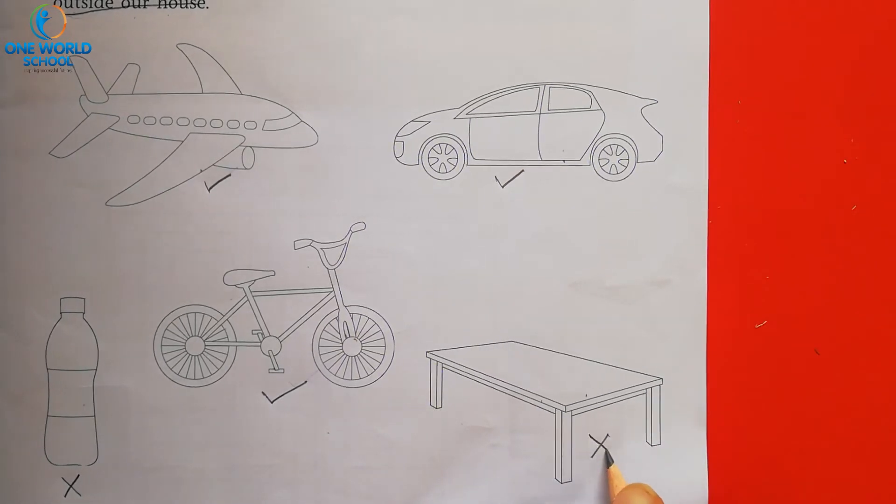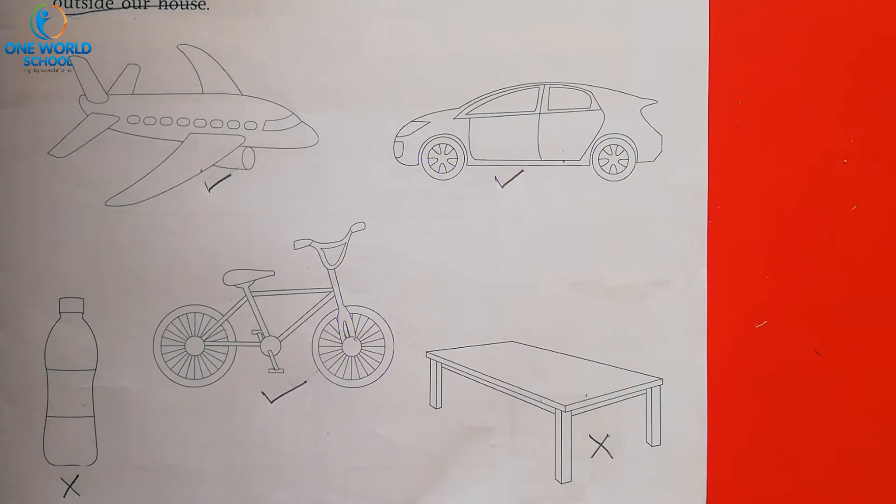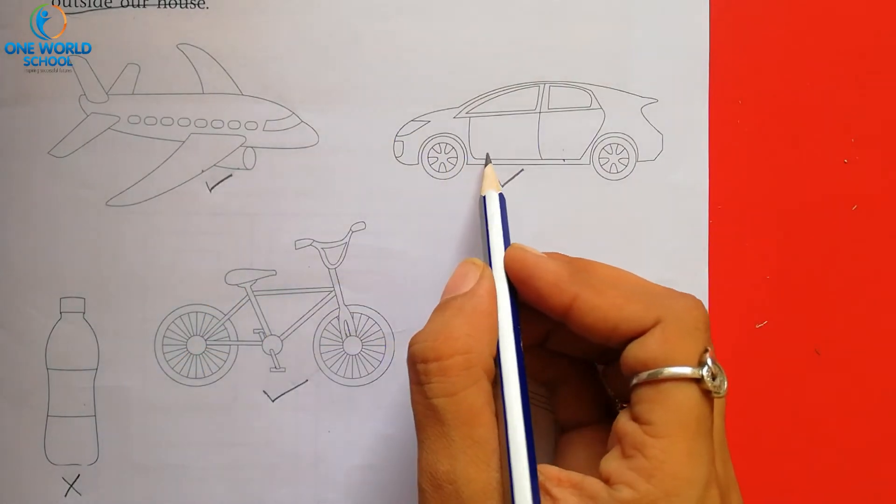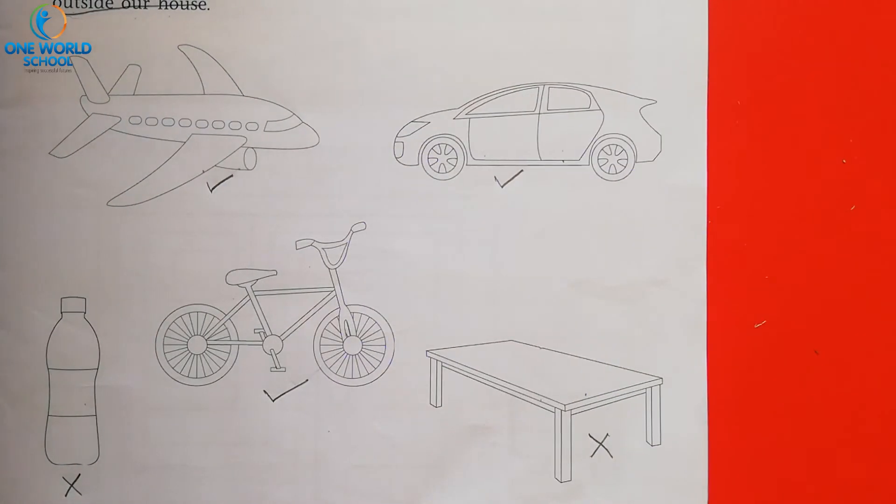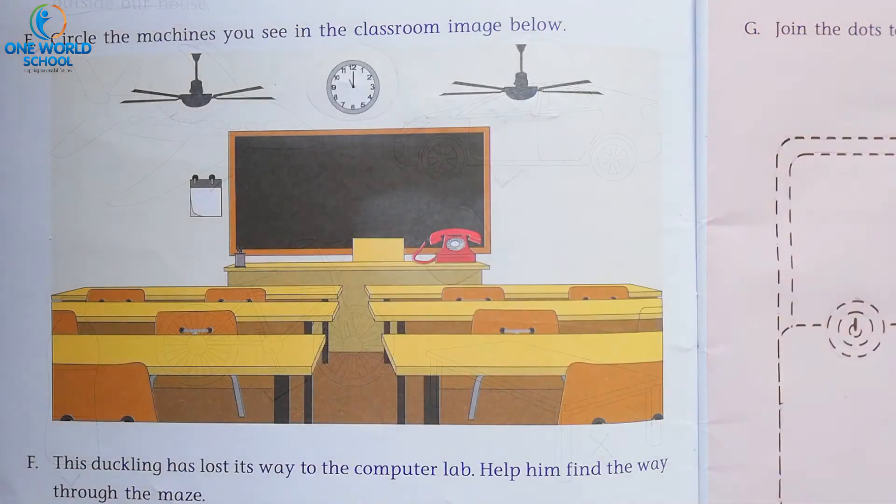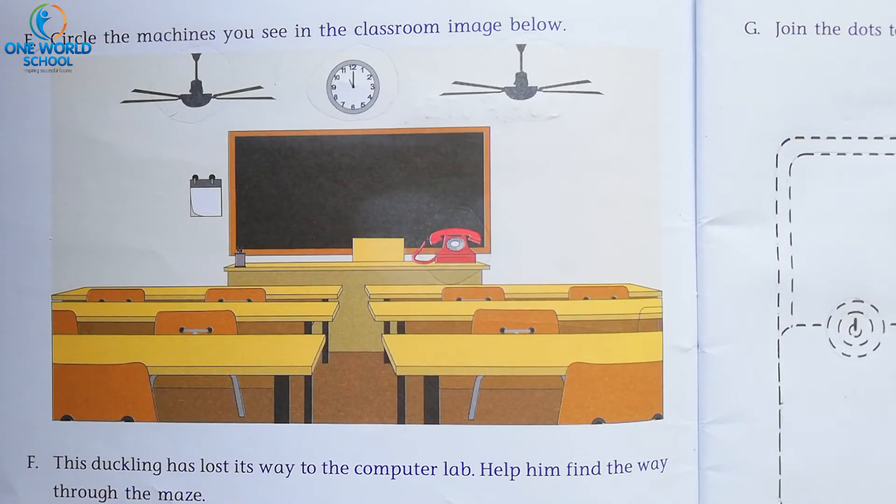So, we have to do cross mark. Okay? So, you can color it. Aeroplane, car, bicycle. Okay? Now, color this picture and turn the page number eight. Now, come on page number eight.